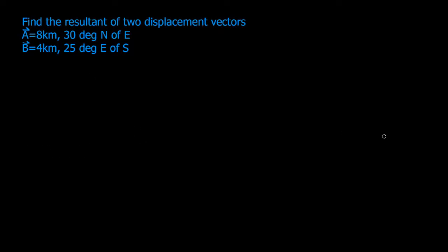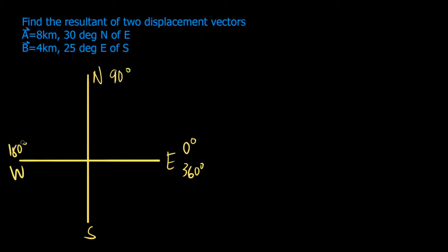So the first thing that you do is to draw or plot these vectors. We have a coordinate plane but instead, let's have east here, north, west, and then south. Consider that 0 degrees or 360 degrees, this is 90 degrees, 180 degrees, and 270 degrees.